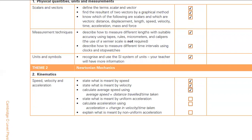Acceleration is calculated as change in velocity divided by time taken: a = (v − u) / t. This formula comes up very frequently. Non-uniform acceleration means the change in velocity in equal time intervals is not uniform; on a speed-time graph it appears as a curve — either bending upward or downward — not a straight line.